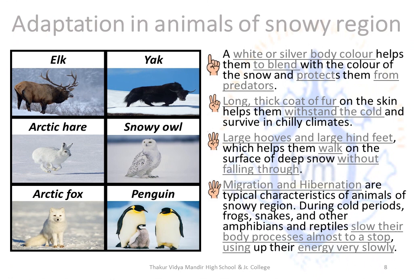Adaptations in animals of snowy regions: A white or silver body color helps them to blend in with the snow and protects them from predators. They have a long thick coat of fur on their skin which helps them withstand the cold and survive in chilly climates. Penguins have a layer of fat underneath their skin which helps them keep warm. Large hooves and large hind feet are present in animals which help them walk on the surface of deep snow without falling through.